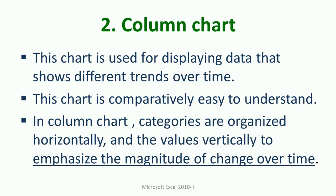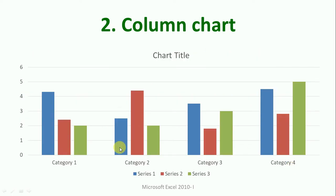The next chart is the column chart. This chart is used for displaying data that shows different trends over time. It is comparatively easy to understand — most of the time you will see the use of bar charts and column charts. In column charts, categories are organized horizontally and values are represented vertically, emphasizing magnitude — that is, how much data has risen or changed.